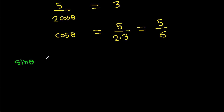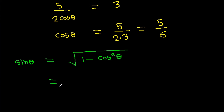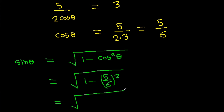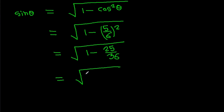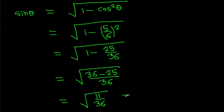And sin theta equals the square root of (1 minus cos squared theta). So it equals the square root of (1 minus 25/36), which is the square root of (11/36), giving sin theta equals √11 divided by 6.